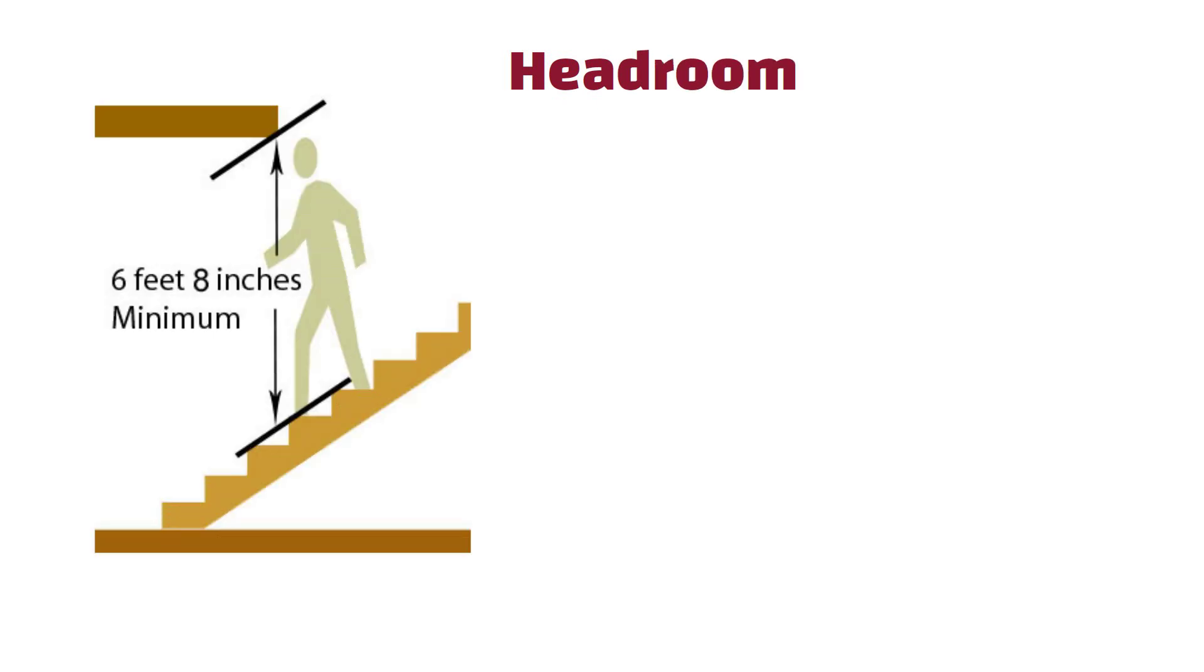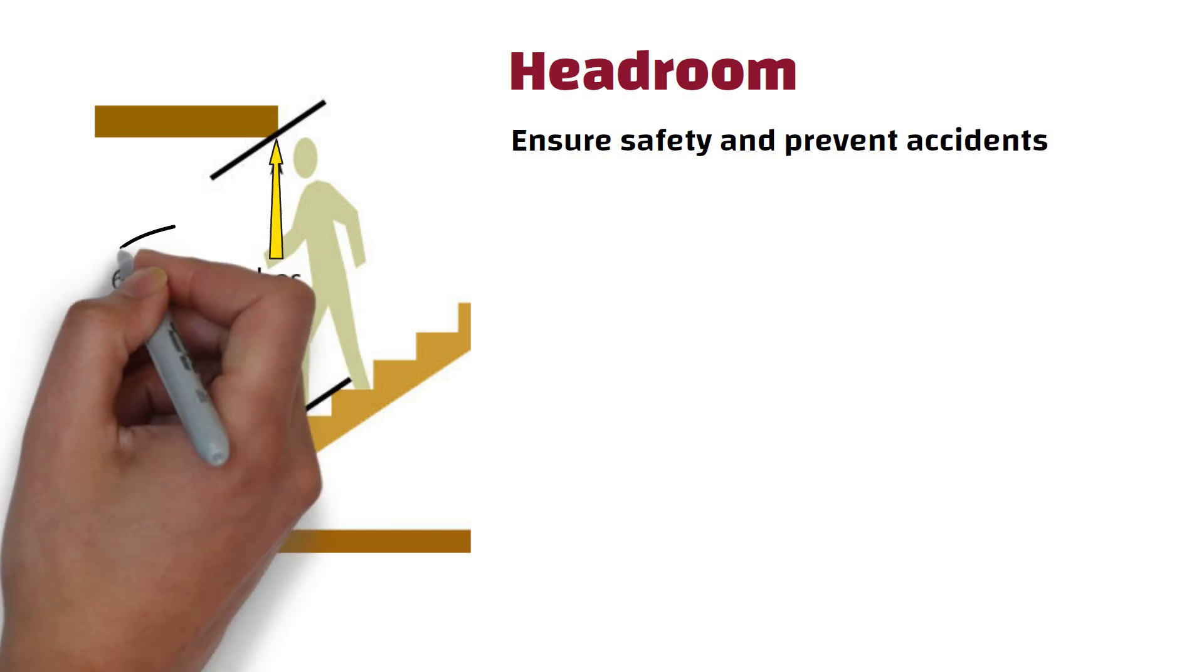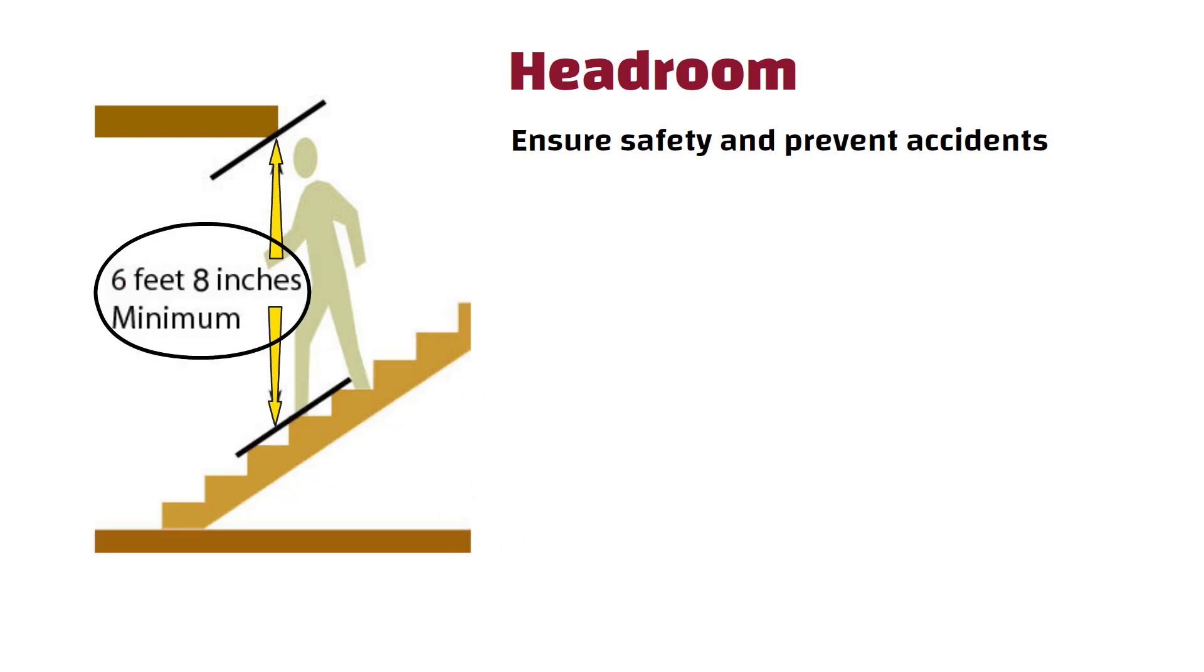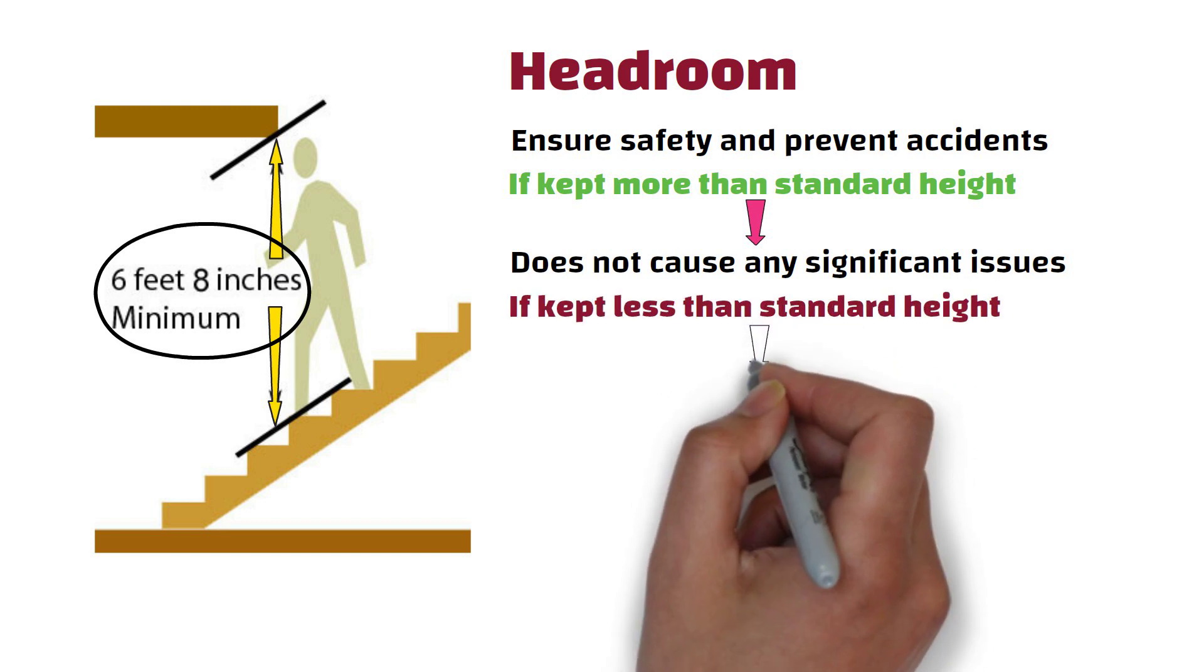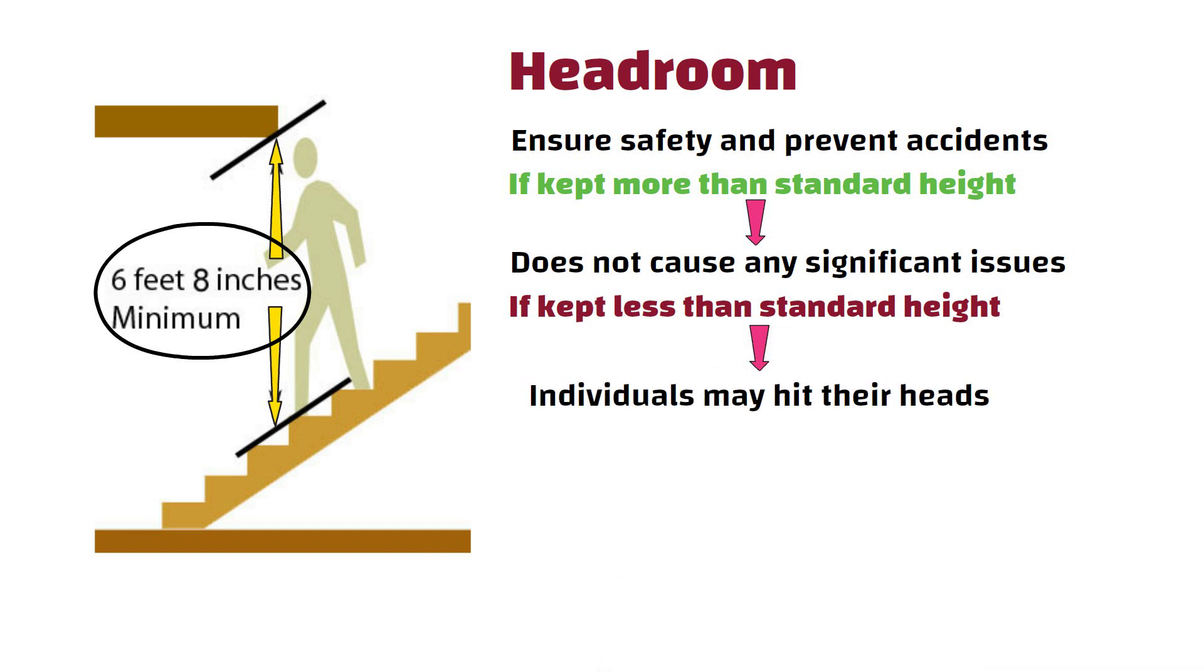10. Headroom. Headroom in a staircase refers to the vertical distance between the highest point of the tread and the ceiling or any obstructions above it. The purpose of having adequate headroom in a staircase is to ensure safety and prevent accidents. Common guideline is to maintain a minimum headroom of 6 feet 8 inches, i.e. 2.03 meters. If the headroom is more than the standard height, it generally does not cause any significant issues. On the other hand, if the headroom is less than the recommended standard, individuals may hit their heads while using the stairs.